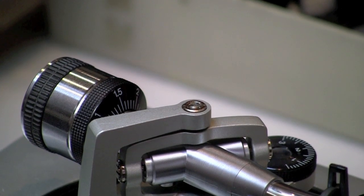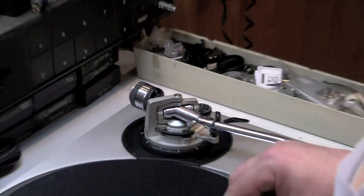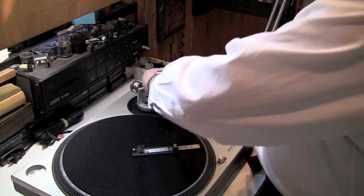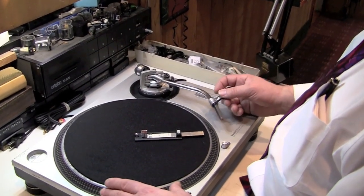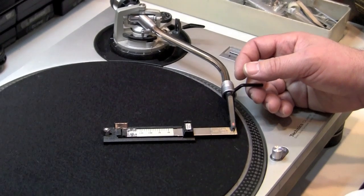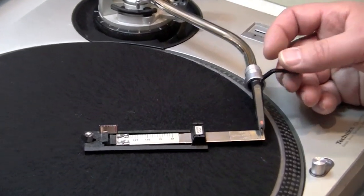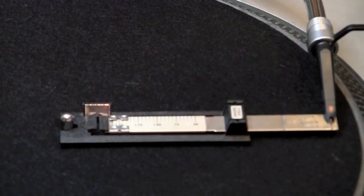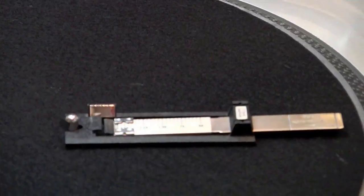Now we will use our Shure Stylus gauge and we will set that at 1.5 grams to be accurate. And we bring that over and you notice that we are at 1.5 grams.